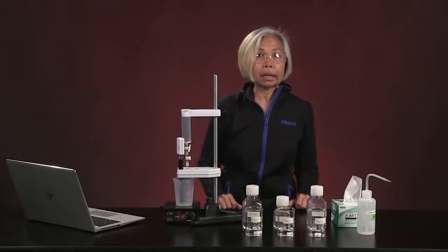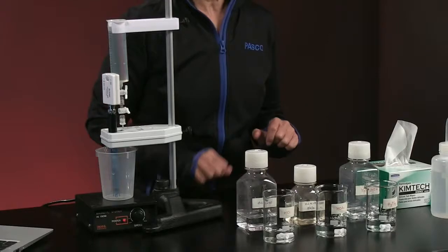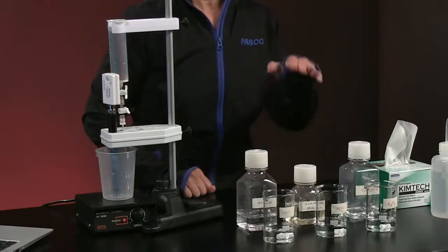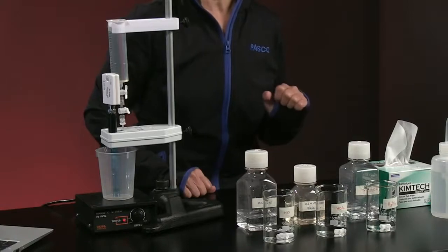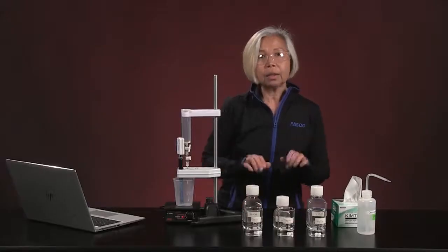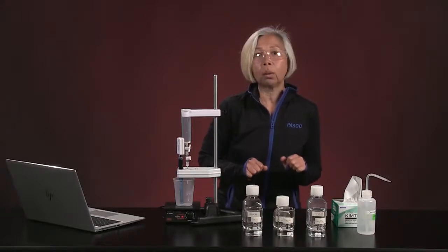Let's talk about the acids that we're going to be examining today. We have a sample of hydrochloric acid, a sample of a weak acid, acetic acid, and a polyprotic acid, phosphoric acid. Now, each of these acids has a concentration of approximately 0.1 molar.